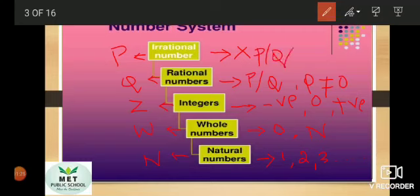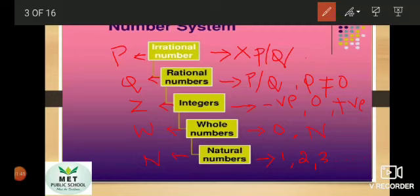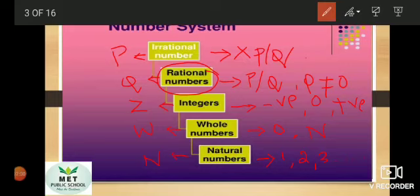Make a note. Natural numbers include all the counting numbers. Whole numbers include 0 and natural numbers. Integers include negative numbers, 0, and positive numbers. Rational numbers, which you are going to study in detail in this lesson, are written in the form of p/q where q is not equal to 0. Irrational numbers cannot be written in the form of p/q.